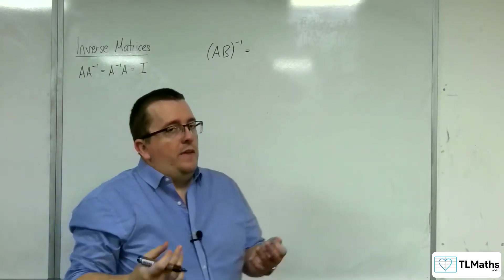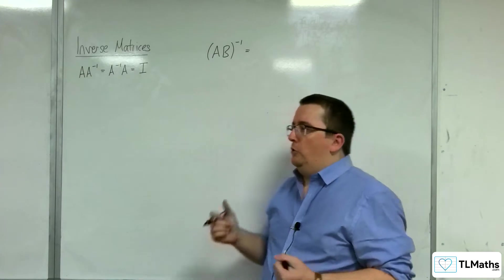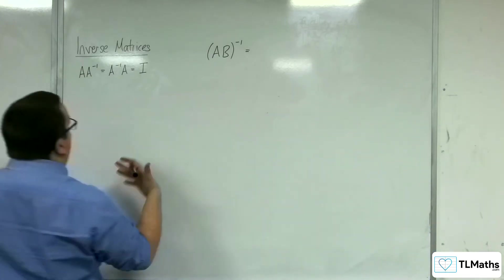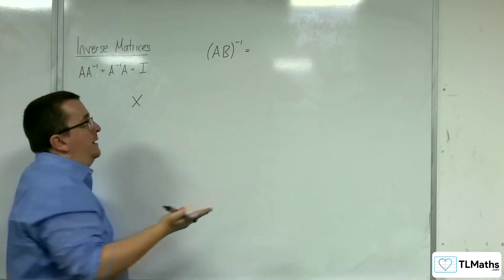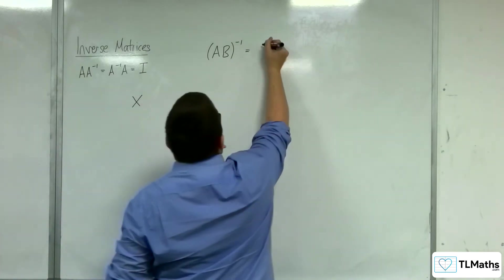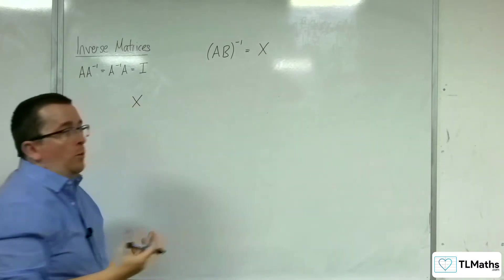So the idea then is that there is this matrix X which will be this inverse, and I want to work out what X is.